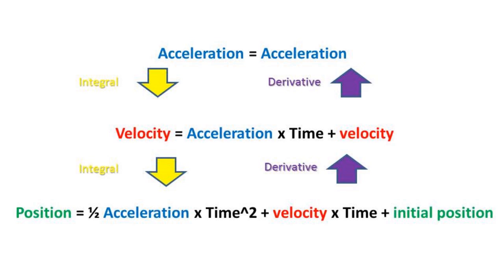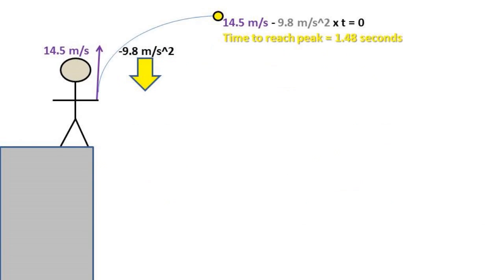Now for solving for max height, we can use our velocity equation and plug in our numbers. We plug in our 14.5 meters a second velocity in the y direction and our negative 9.8 meters per second squared acceleration due to gravity. And we set the equation to zero due to the velocity being zero at the peak. Rearranging the formula, we get 1.48 seconds to reach the peak.